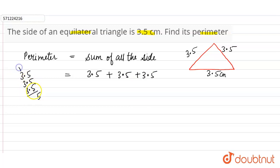Now 3 plus 3 plus 3 is 9, 9 plus 1 is 10. So the perimeter of the equilateral triangle is 10.5 centimeters, and this is the required answer for the given question.